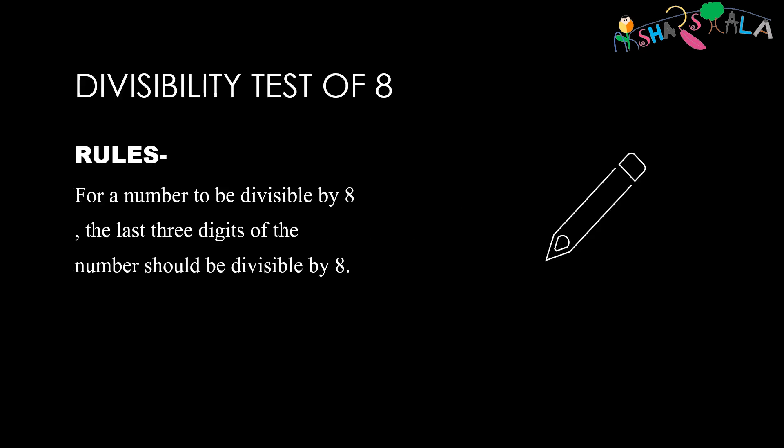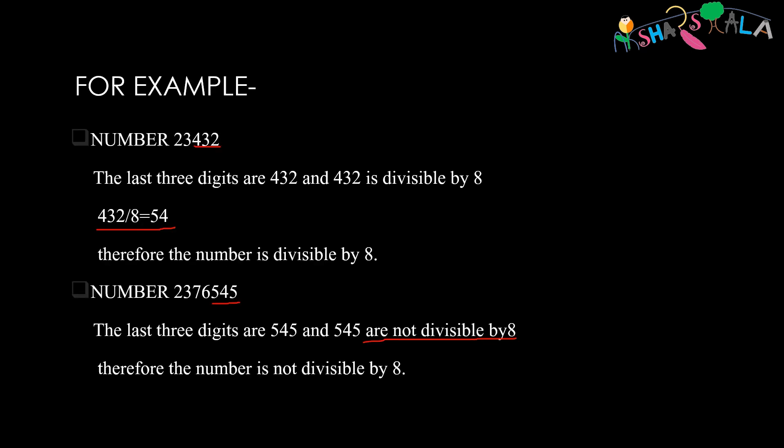Now we have the divisibility test of 8. Here, the rule says that for a number to be divisible by 8, the last three digits of the number should be divisible by 8. Heading on to examples, we have our first example, number 23432. The last three digits of this number are 432. And we can see that 432 is 54 times divisible by 8. Therefore, the number is divisible by 8.